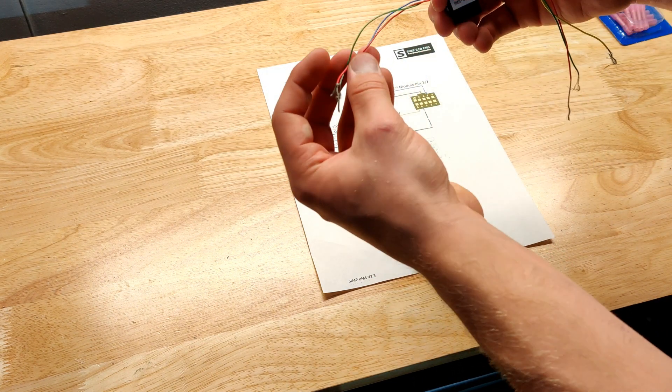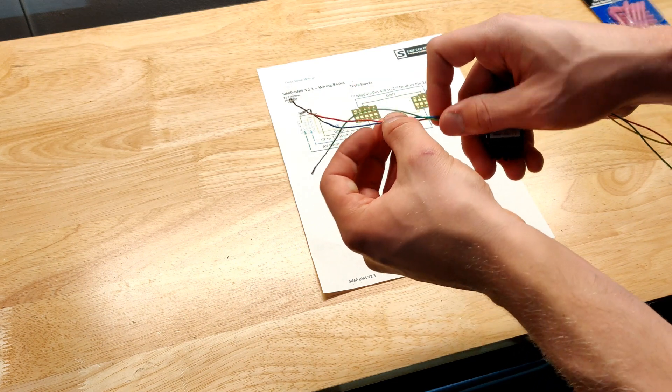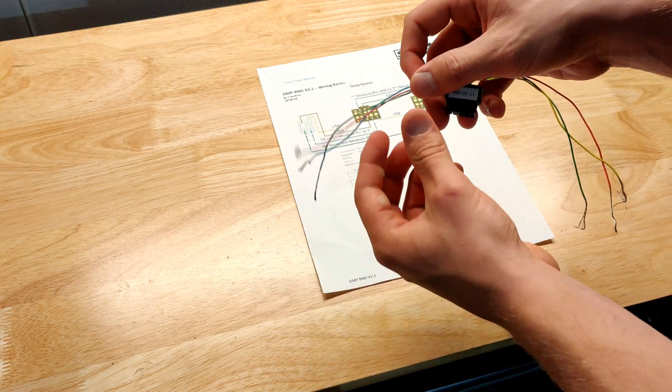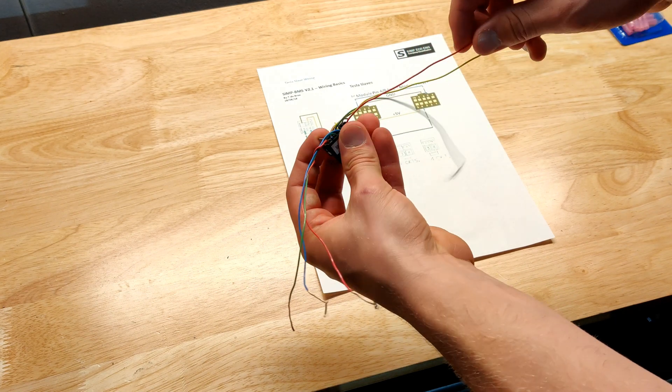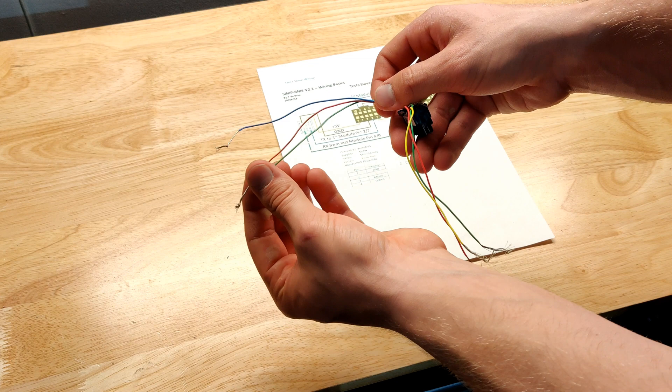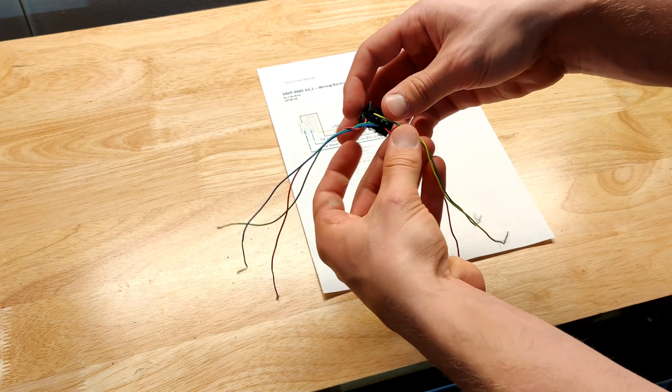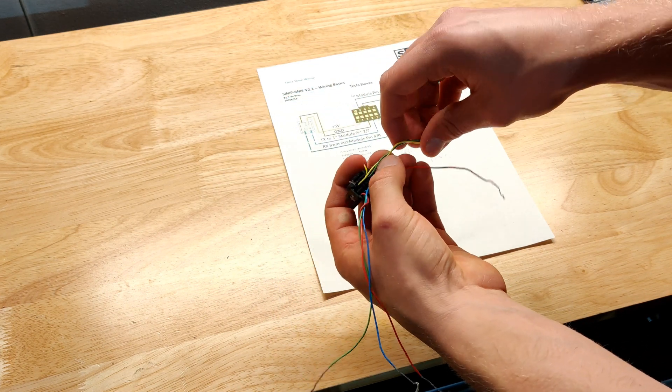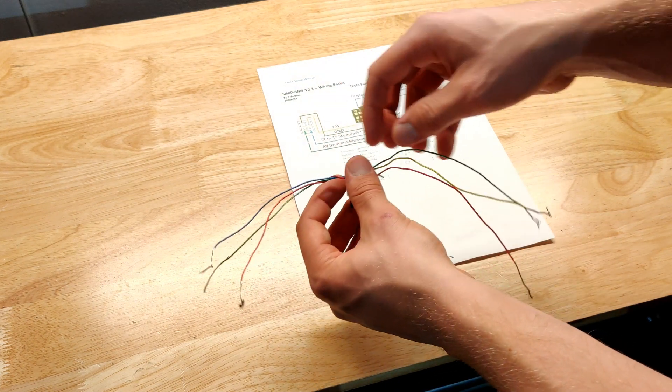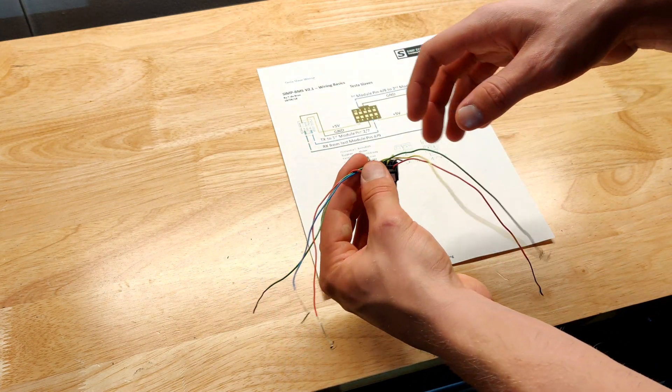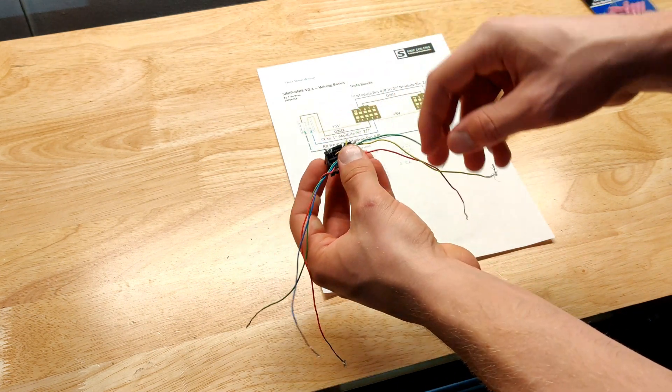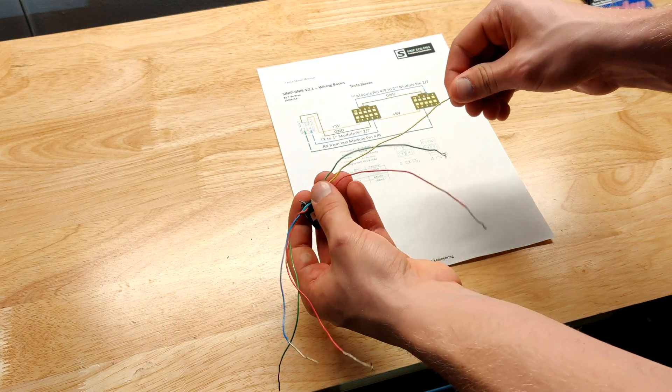The 6 that you do need are your 5 volt power in, which is this red one right here, and then the corresponding 5 volt power out. Same situation with your ground wire right here in green, and then the ground out wire, also green. And then these blue and yellow wires, these are the communication wires. The blue one is the communication in, and the yellow one is the communication out.